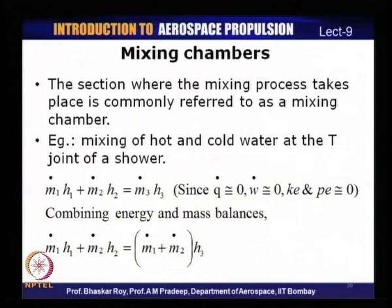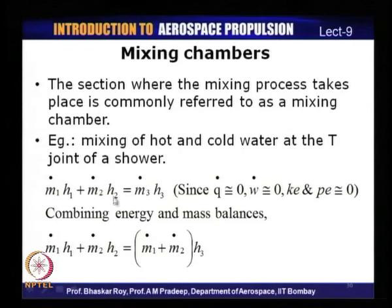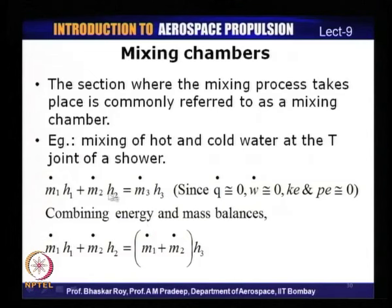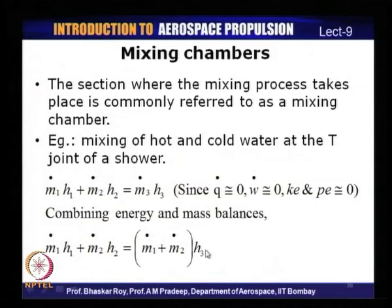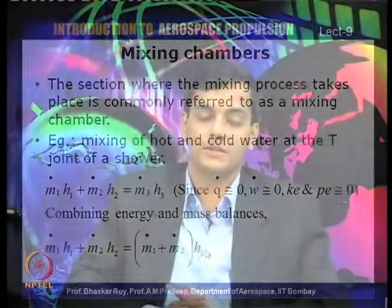The last device discussed is a mixing chamber — a section where a mixing process takes place. An example is the mixing of hot and cold water at a T-junction in a shower. Here two masses M1 and M2 enter and leave as M3. Since we assume net heat transfer is zero, work is zero, and changes in kinetic and potential energy are zero, the energy equation reduces to M1_dot H1 plus M2_dot H2 equals (M1_dot plus M2_dot) times H3 — the net enthalpy leaving equals the sum of enthalpies entering.